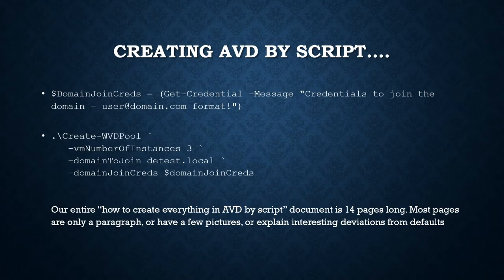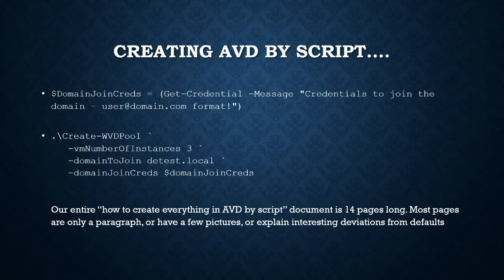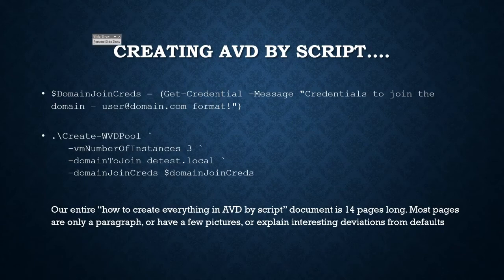We don't always have to do this through the portal. Everything I did in the portal — going through the five-page wizard, registering a desktop, adding machines — we can do that with just two lines of script. The first just grabs a credential and the second says 'create the pool.' All the other information — specification of machine, which image — comes from our defaults. The way our scripts work is they have a good set of defaults, so you specify minimum information and you've got working Azure Virtual Desktop.